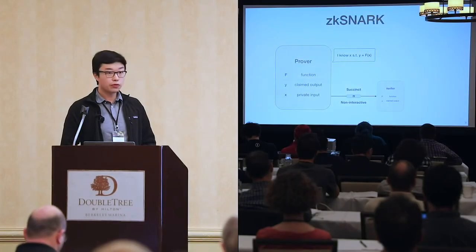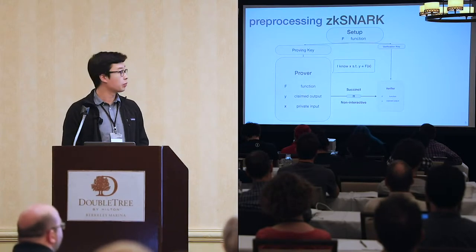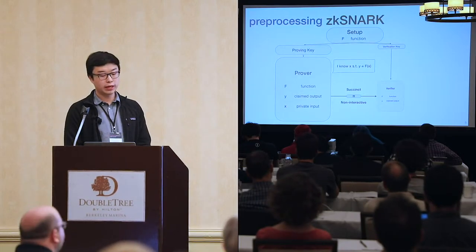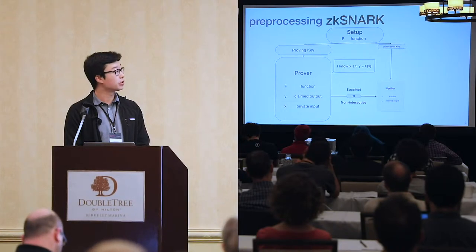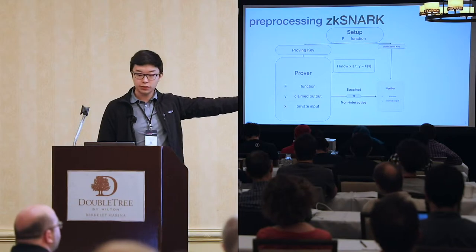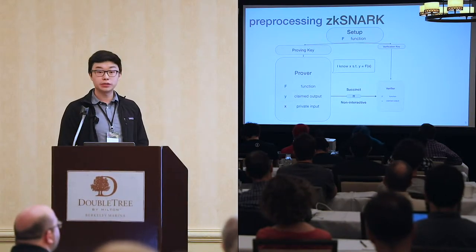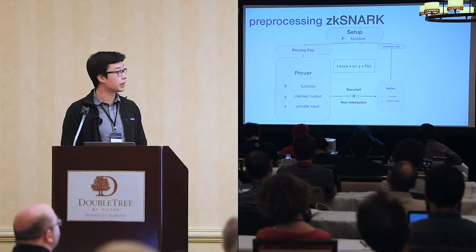We're going to focus on one particular type of ZK-SNARK today, and this is a preprocessing ZK-SNARK. What this means is that there is a setup, and the setup takes as input a public function f, and it will output two things: a proving key on the left and the verification key on the right. Note that the proving key here is significantly larger than the verification key.